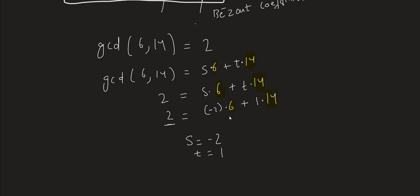For us to equate and make it equal to 2, the possibility is if the value of s is equal to minus 2 and the value of t is equal to 1. That way we can express it in terms of the Bézout identity with Bézout coefficients, so that the entire thing on the right-hand side is equal to the GCD, which is 2, on the left-hand side.